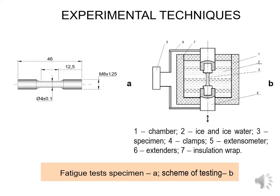Specimens were machined from rod of 8 mm in diameter. Fatigue tests were carried out at 0°C under uniaxial tension of cylindrical specimens with a diameter of 4 mm and gauge length of 12.5 mm. Specimens were tested in a chamber with ice and ice water, and the extensometer was mounted using extenders. Tests were carried out on a servo-hydraulic testing machine STM100 with automated control and data acquisition system. Sinusoidal loading with a frequency of 0.5 Hz was performed.